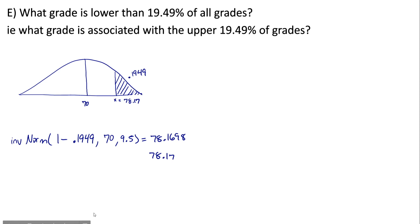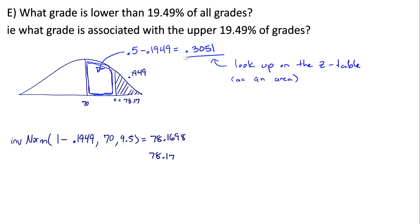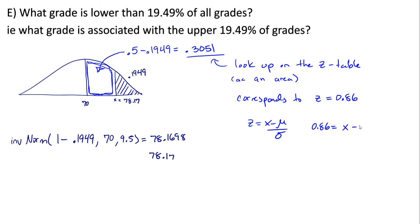Using the tables: we need the piece of area between the mean and the z-score. The right half of the curve is 0.5, so that piece is 0.5 − 0.1949 = 0.3051. Looking this up on the z-table, it corresponds to z = 0.86. Since the value falls above the mean, we keep it as positive 0.86. Using the z-score formula: 0.86 = (x − 70) / 9.5. Solving algebraically, x = 78.17, which matches the calculator result.